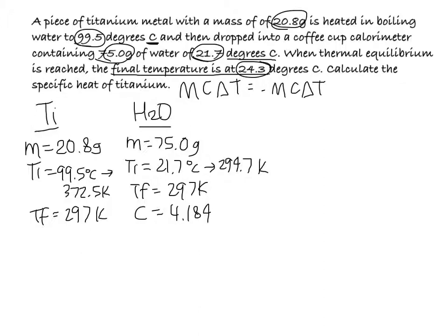This problem is asking you to calculate the specific heat of titanium. So you are finding C for titanium. Since you have all the givens, you would just need to plug it into the MCAT equals negative MCAT formula. You would do final minus initial.